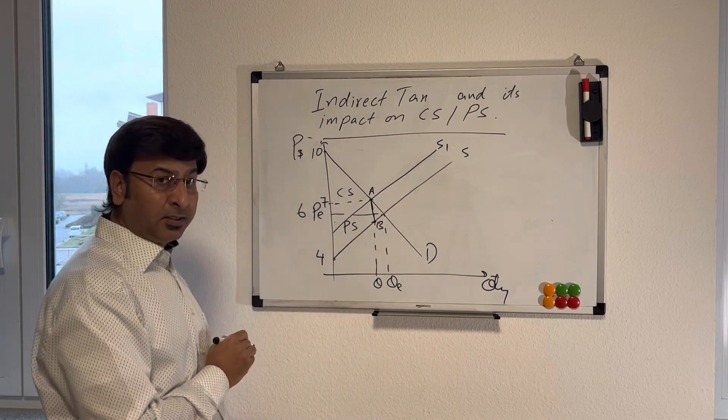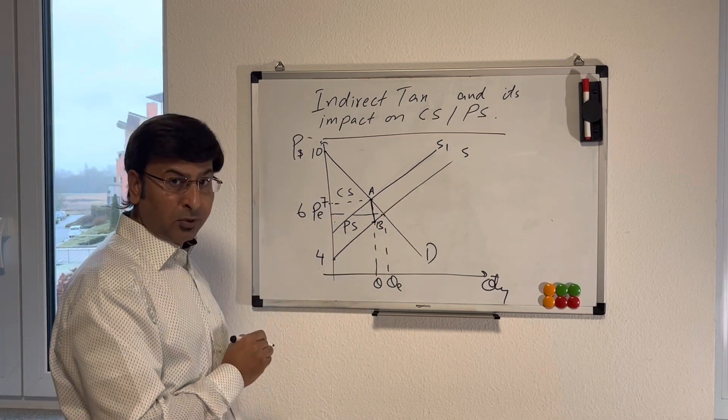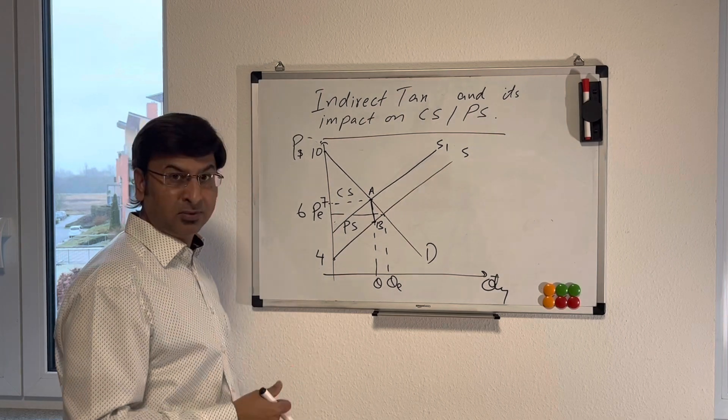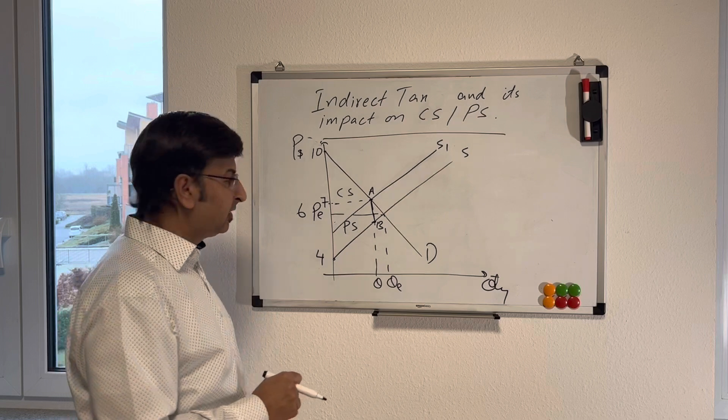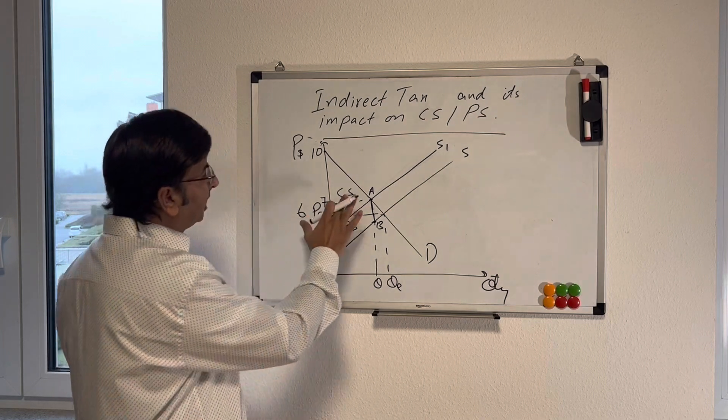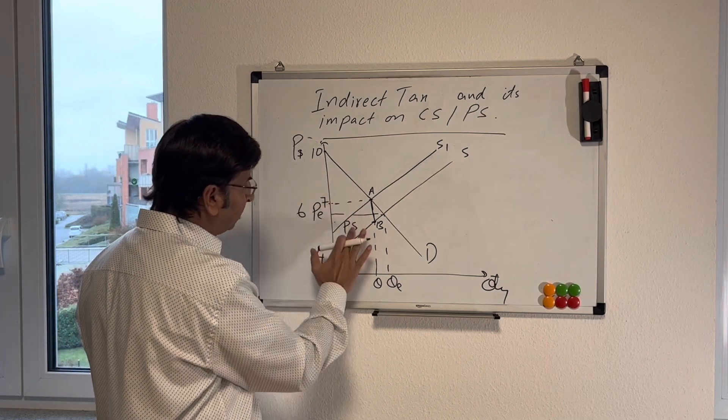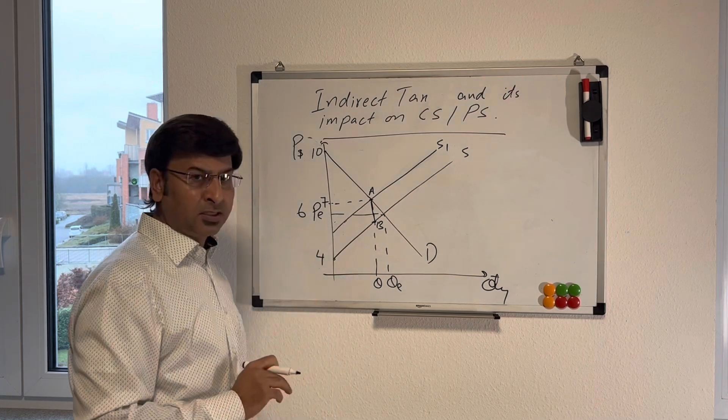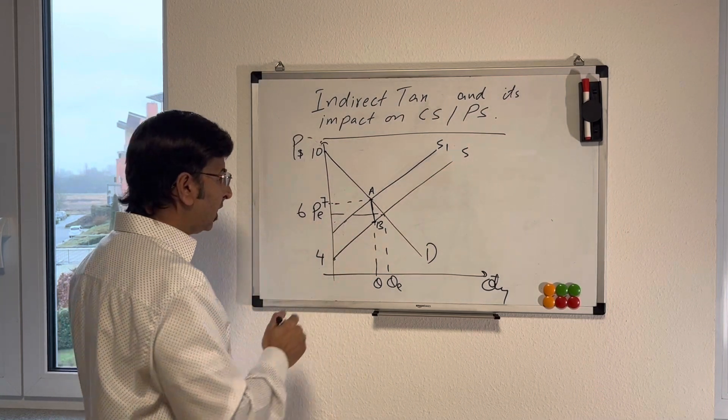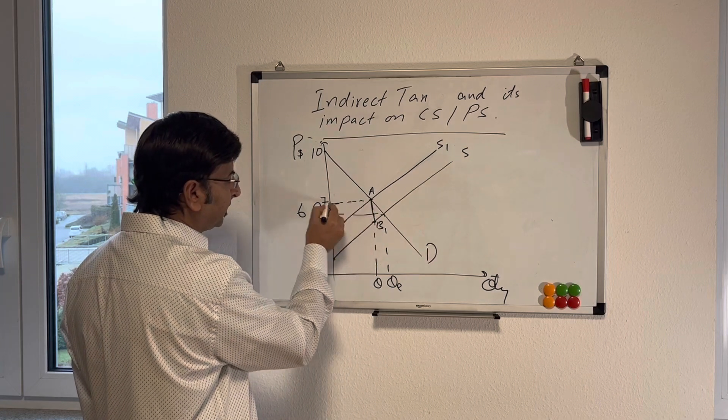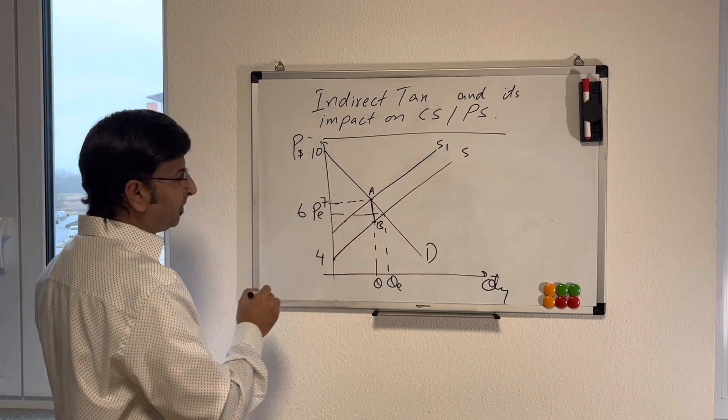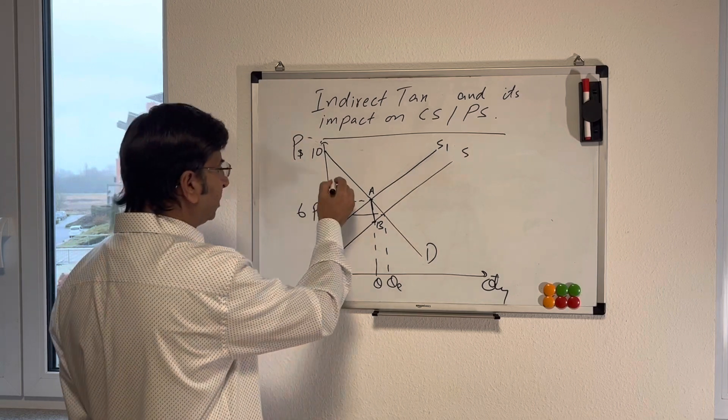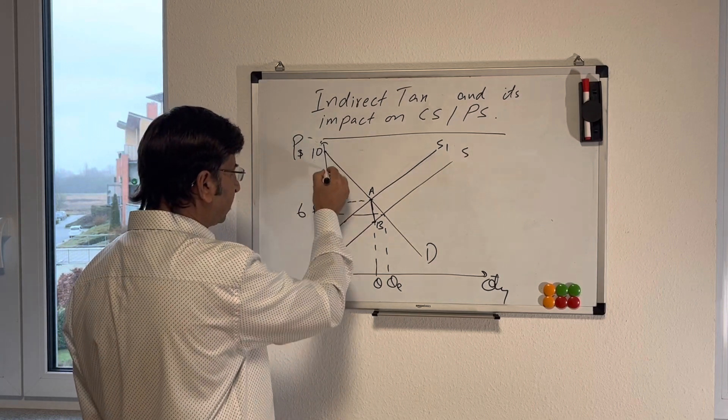In order to find the consumer and producer surplus, because that is our topic for the time being, I thought that I'm teaching the impact of taxes. I'm going to erase this consumer surplus and producer surplus here because this was the surpluses before the tax was imposed. As you can see, the equilibrium price after the tax is 7. So consumer surplus is reduced to this triangle.